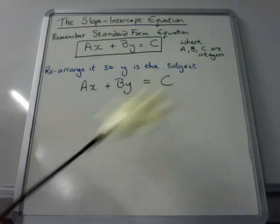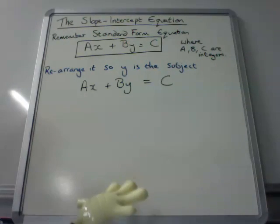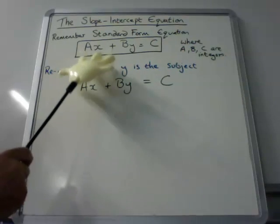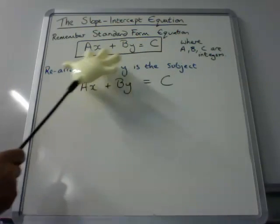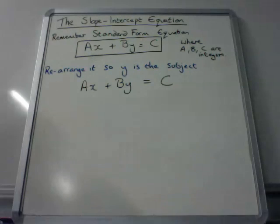And that is Ax plus By equals C, where A, B, and C are integers. Now if you can rearrange any equation into this format, even before I try and find points or try to plot it, this is what we call a linear equation, which means when I draw it on a graph, I get a straight line. Straight line, linear, you get it? Good.